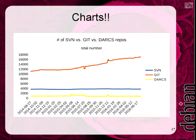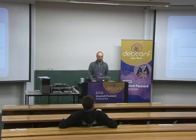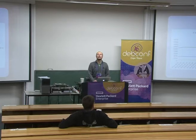Another interesting thing is that because I also collect the total number of repositories, you can clearly see that Git is on the rise. Subversion is still somehow prominent but slowly getting lower. Subversion, Git, and Darcs were the top three in terms of number of repositories. Subversion seems stable but it's actually declining very slowly, while Git is clearly on the rise.